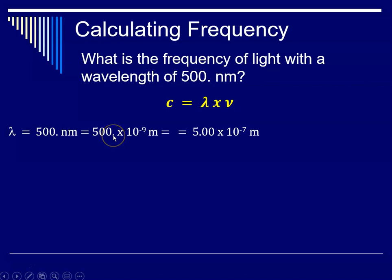To put it into correct scientific notation, which, good thing, your calculator will do this for you, you would move this decimal two places. And that would then give us 5.00 times 10 to the minus 7 meters. Why do I want meters? Because my c, my speed of light, is in meters per second. So now c is our constant, 3.00 times 10 to the 8 meters per second. And frequency is what we're trying to figure out.